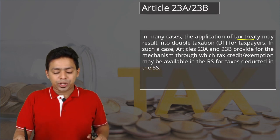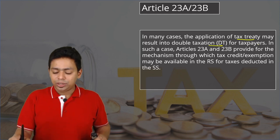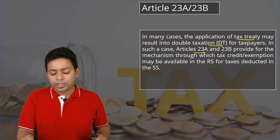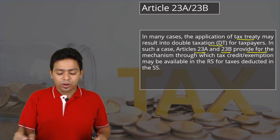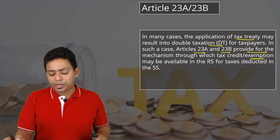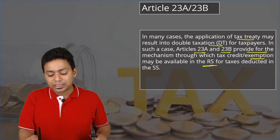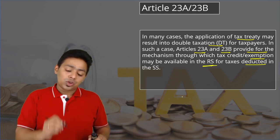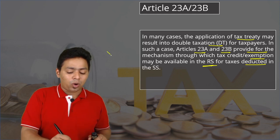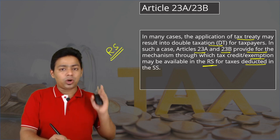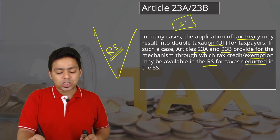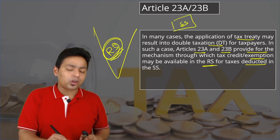In many cases, the application of a tax treaty may result in double taxation for the taxpayer. In such cases, Article 23A and 23B provides a mechanism through which tax credit or exemption may be available in the resident state for the taxes deducted in the source state. The relief will always be given by the resident state — this is what you need to remember.